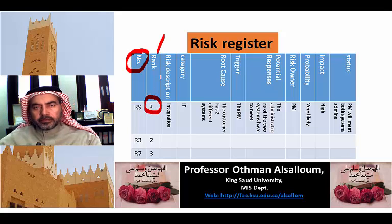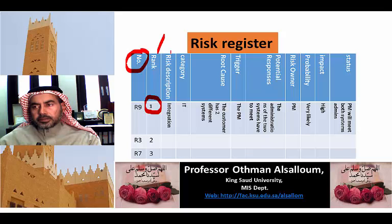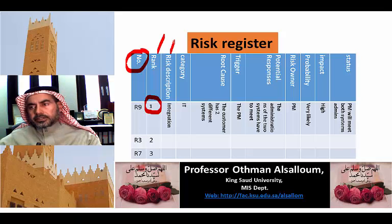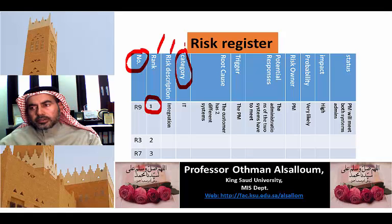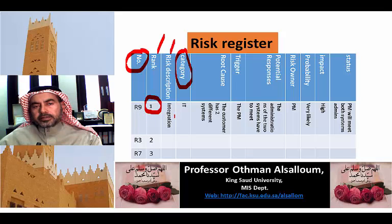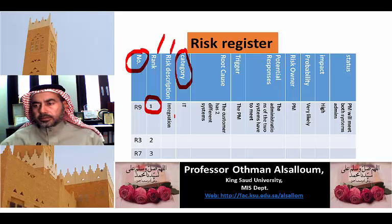The one with the first priority is ranked number 1, and so on. We put a description for every potential risk and make a category — which department or which subject it belongs to. For example, Risk item number 9 is about integration with some systems. We rank this as a first priority potential risk, and it belongs to IT.